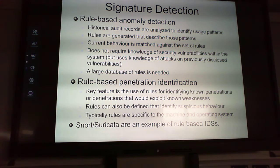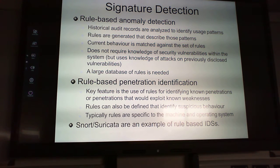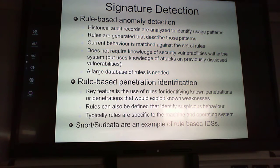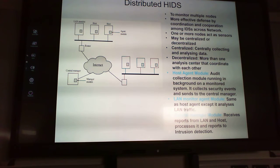Snort and Suricata are examples of rule-based IDS. Snort is the one you'll probably run into in your networking adventures — it's available at snort.org and is open source.